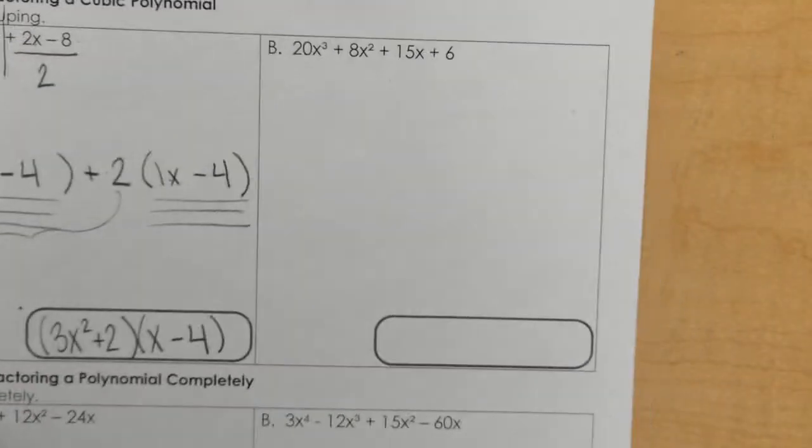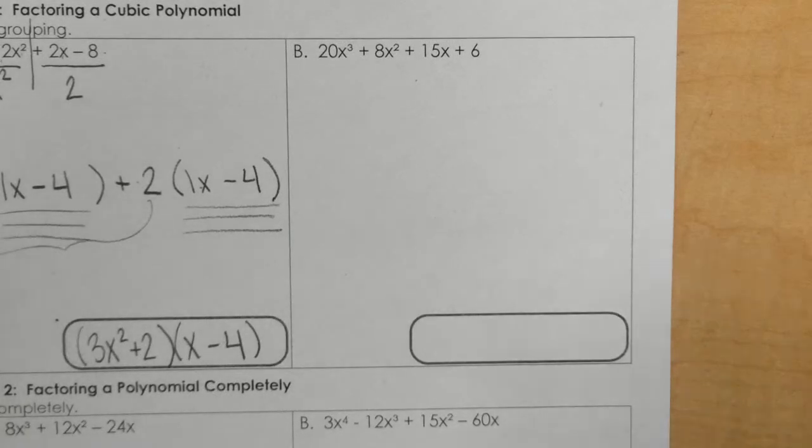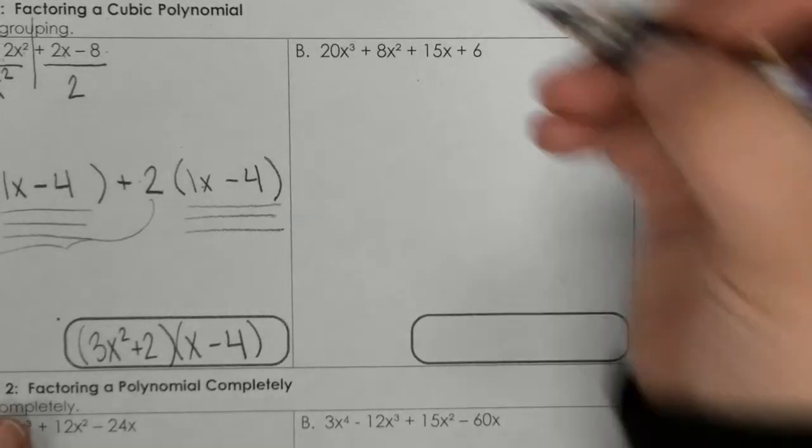So, let's try again, part B. Factor by grouping. You should have four terms. You cut it in half.